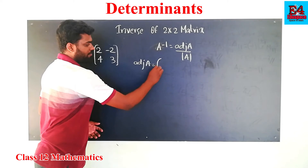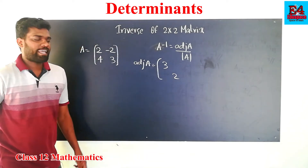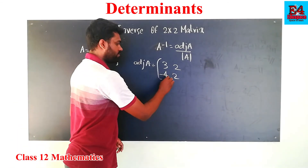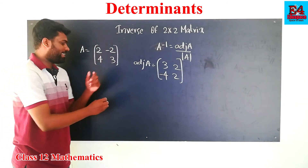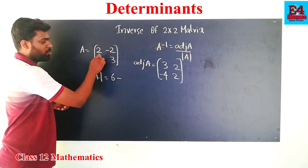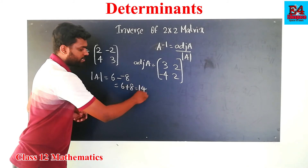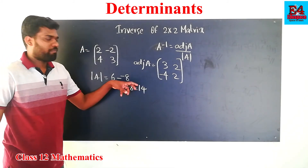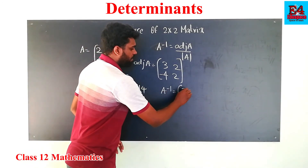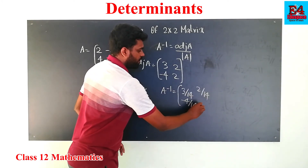We need to find the adjoint of A. The adjoint gives us the matrix entries: 3 by 14, 2 by 14, minus 4 by 14, 2 by 14.